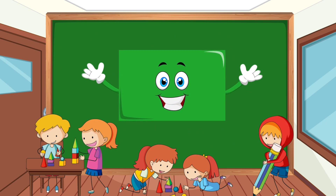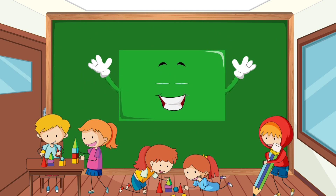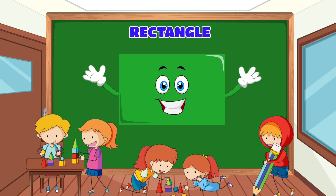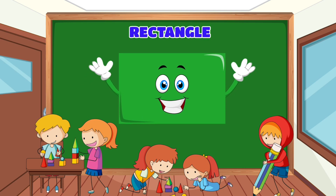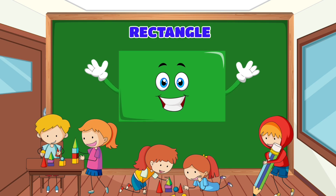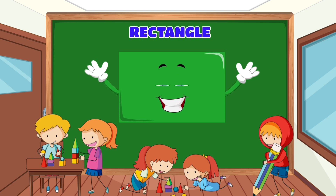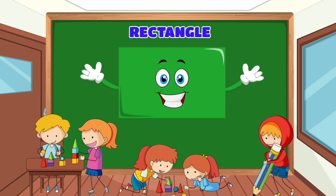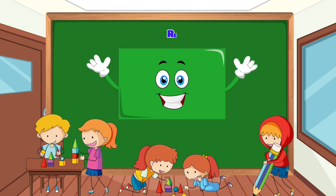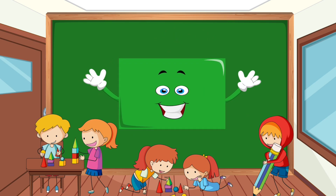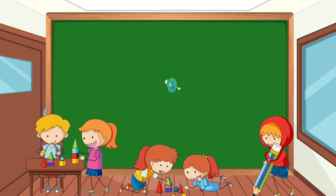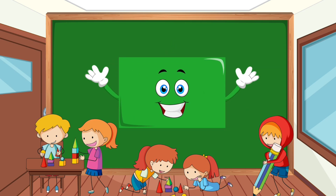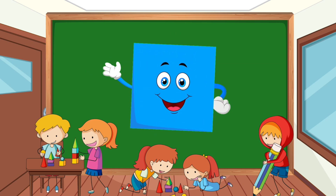Triangle, rectangle, circle, oval, square. I'm a rectangle, you see, like a very long square. I'm a rectangle, you see, like a very long square. A very long square. I'm a rectangle, you see, I'm straight and I'm long like a brick. Triangle, rectangle, circle, oval, square. Triangle, rectangle, circle, oval, square.